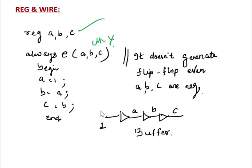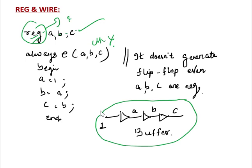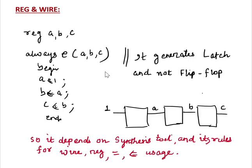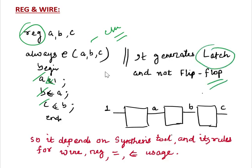Here there is no clock, so it is not going to generate sequential logic — it is simply combinational logic. Even though the variables are Reg, it is not going to generate a flip-flop or sequential logic because as per the rule it should have a clock signal. If we write with Reg and non-blocking assignment but without a clock, the synthesis tool generates a latch, not a flip-flop. Latch and flip-flops are different — no clock means latch, not flip-flop.